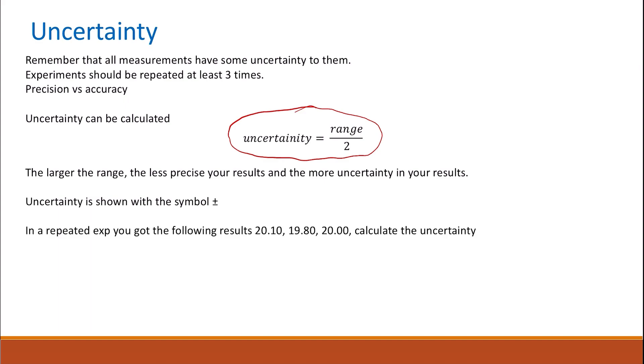Let's have an example to understand how to calculate uncertainty and what it means. In a repeated experiment, you got the following results: 20.10, 19.80, and 20.00.